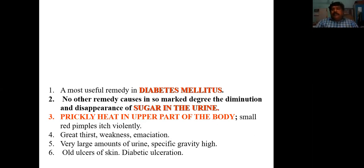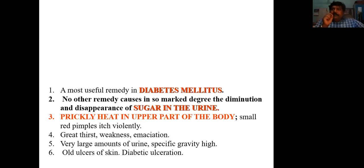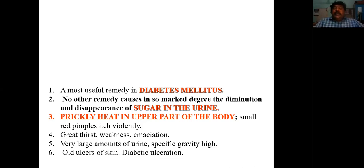The most important differentiating feature of this diabetes remedy is that usually with diabetes, if the patient presents with some sort of slight, small prickly heat — small red spots or boils like things arising in the upper part of the body, just like red pimples scattered in the upper part of the body — with diabetes mellitus, Syzygium is the indicated one. Even when giving in mother tincture form, that symptom must be present. The most important differentiating symptom from other diabetic drugs is prickly heat in the upper part of the body.